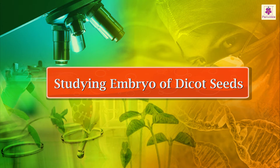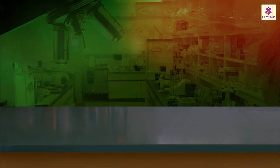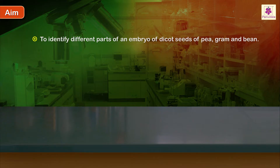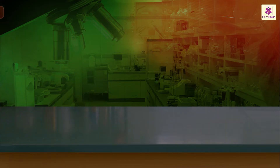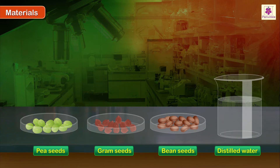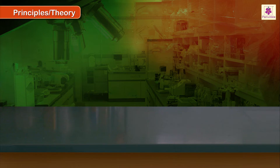Studying embryo of dicot seeds. Aim: to identify different parts of an embryo of dicot seeds of pea, gram, and bean. Apparatus, materials, principles, and theory.